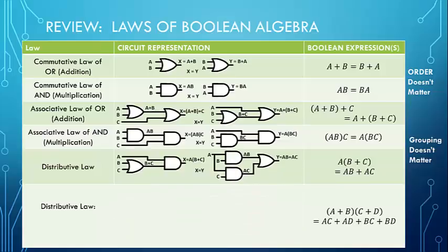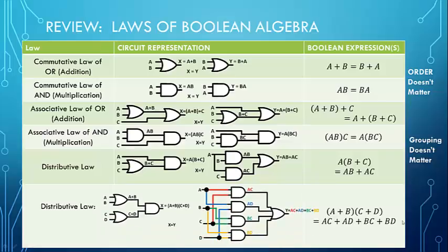We also have distributive laws. If we distribute A through the sum of B plus C, we end up with AB plus AC. That also works for expanding two binomials: A times C plus A times D plus B times C plus B times D. The distributive laws also apply in Boolean algebra simplification.